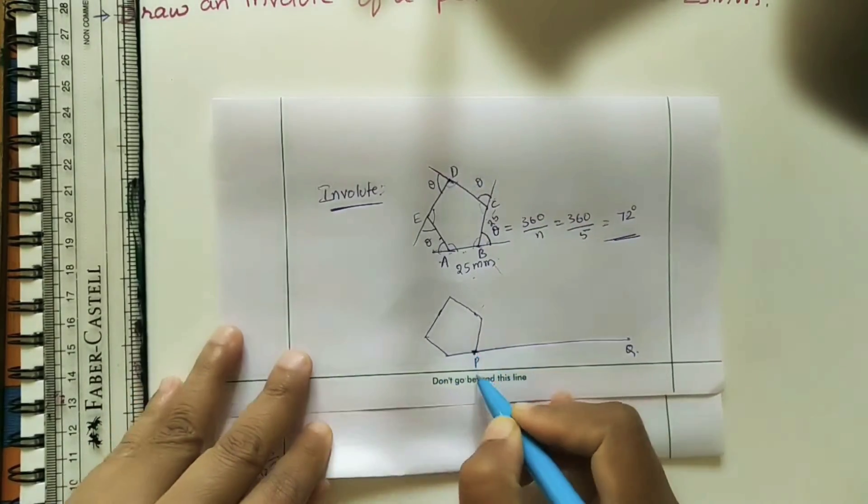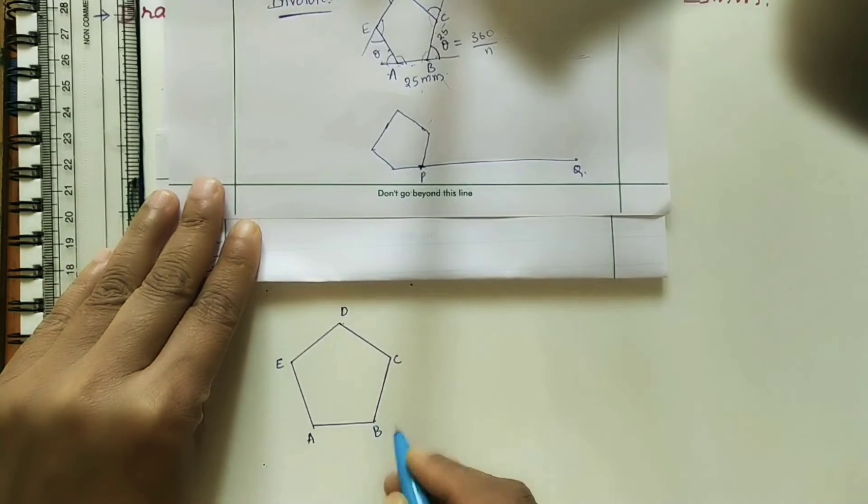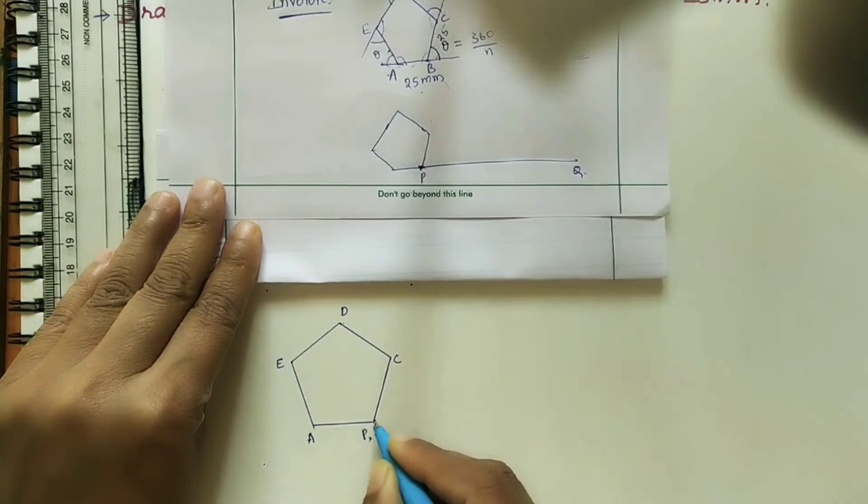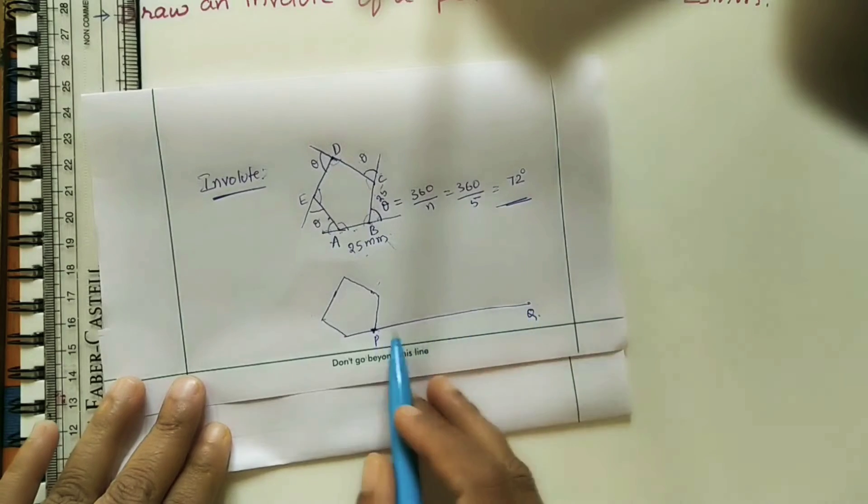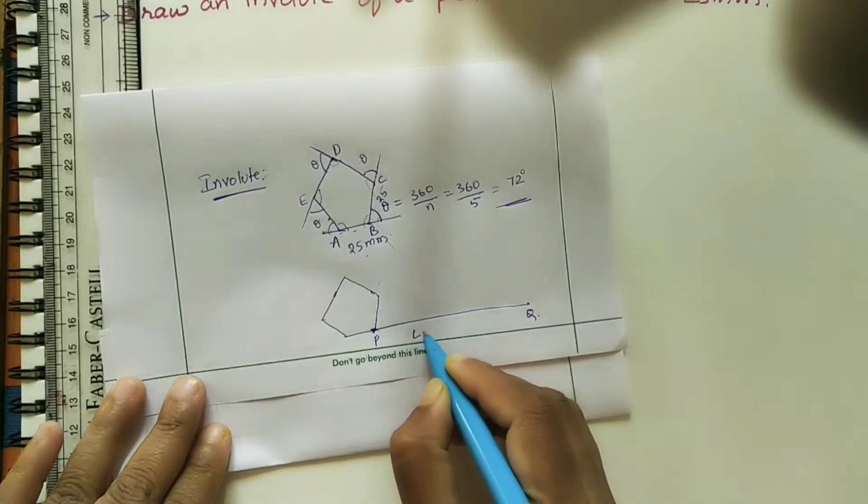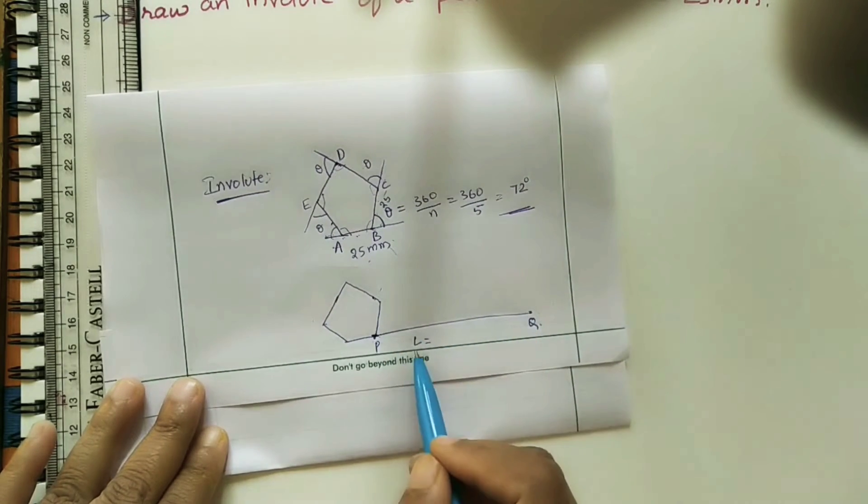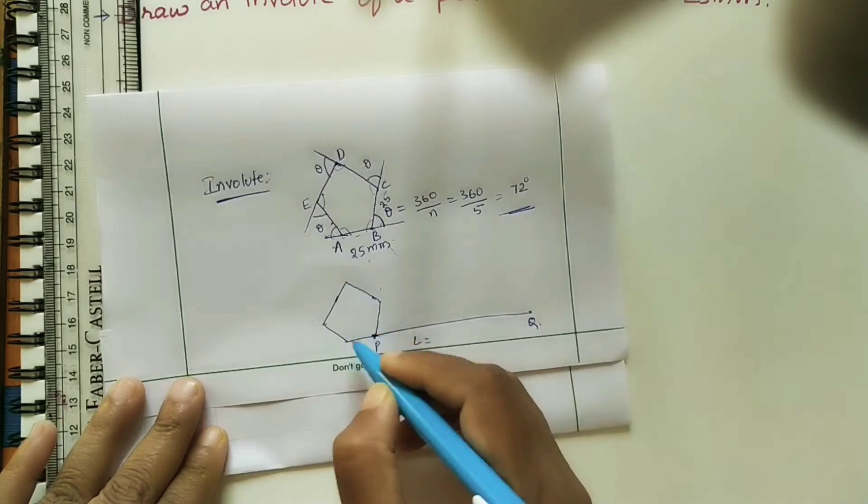After doing the pentagon, draw one line. Mark P point, and P point, and P at the same point. Draw PQ line. This line length is L, where L equals the length of PQ.